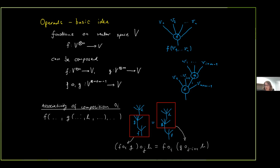Diagrammatically, you are plugging function g into f, and the result is again some oriented tree with some inputs and one output. There is naturally some associativity of this composition. For example, with three functions f, g, and h, you can think about it in two ways: you can first compose g with f, collapse it to one tree, and then plug in h; or you can first compose g and h, and then plug that result into f. These two things should obviously be the same.